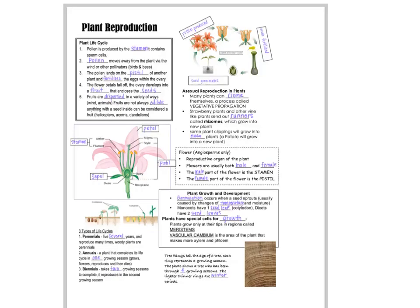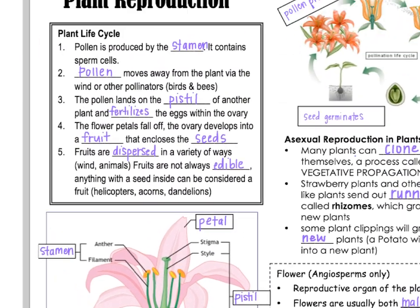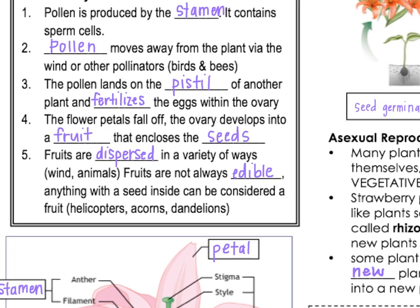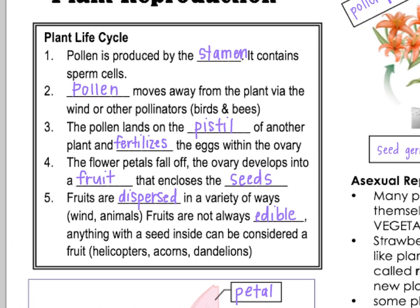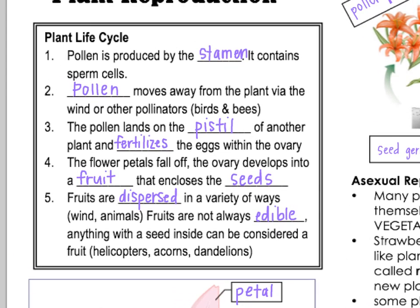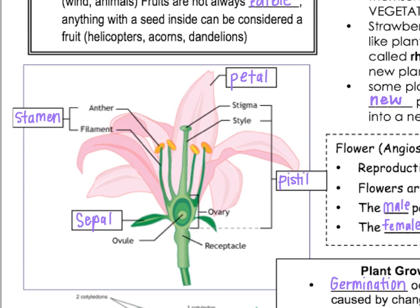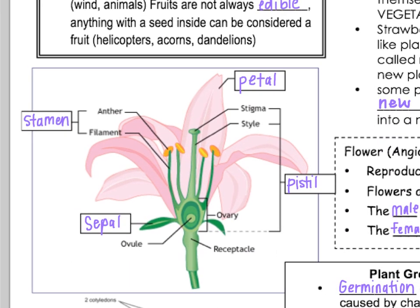In plant reproduction, we're going to start with the life cycle of a plant. The first thing that's going to happen is that pollen is going to be produced by the plant, and pollen is going to be produced in the stamen. If you look at your picture of a plant, your stamen is the male part of the flower.